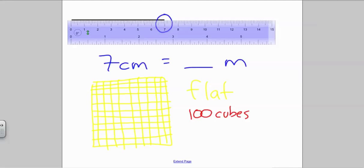The way we should think about this is that a flat can be thought of as one meter. Why? Because just like one flat is made up of 100 cubes, one meter is made up of 100 centimeters.